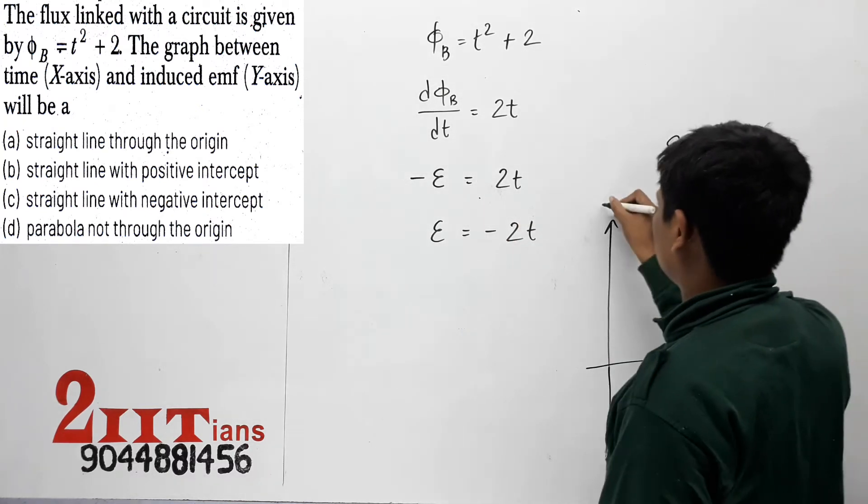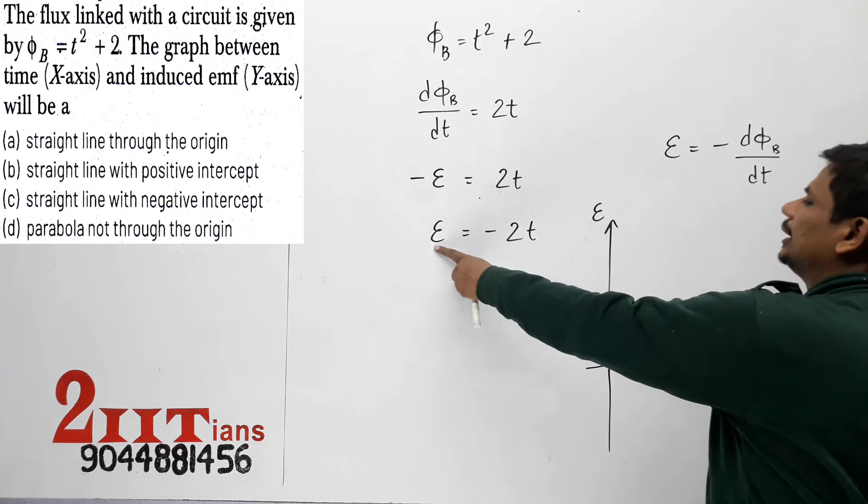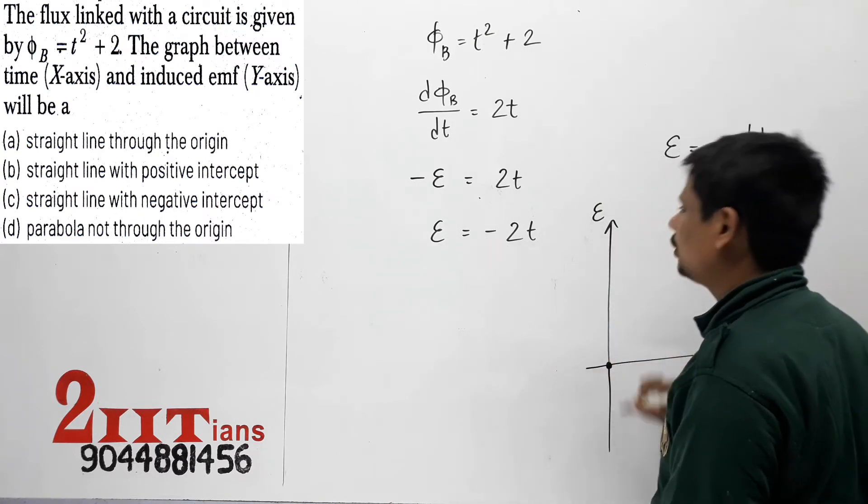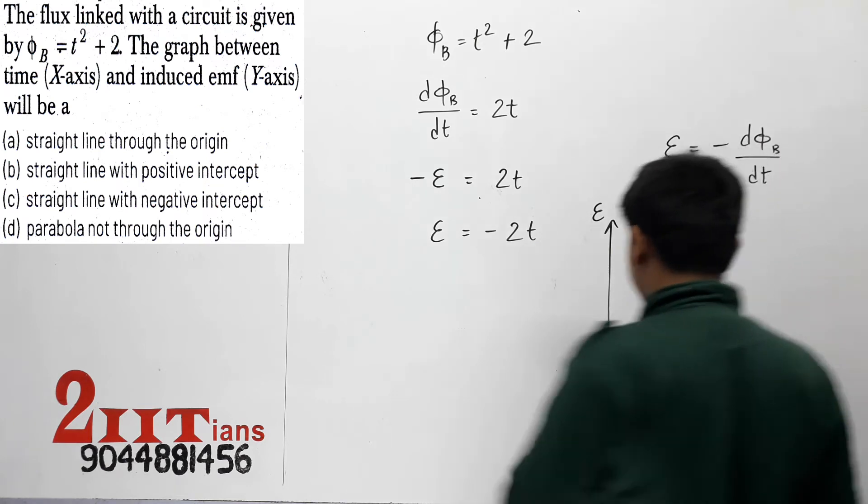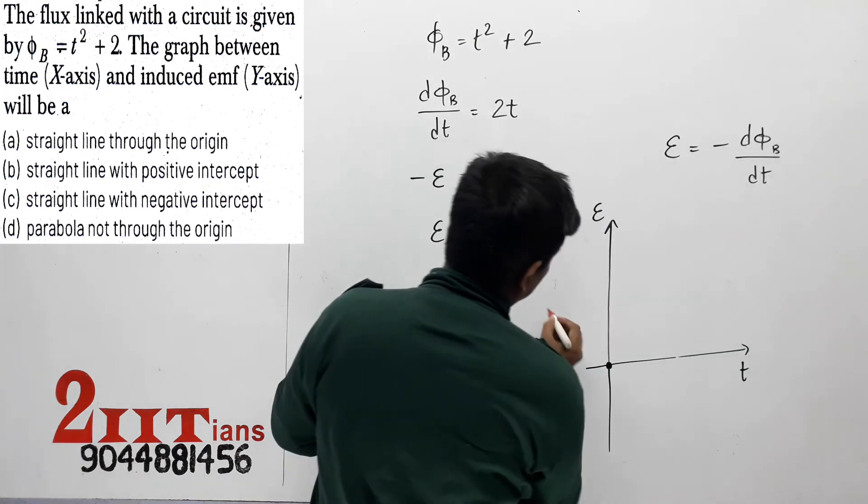Time is here, epsilon is here. When t equals 0, EMF equals 0. With slope minus 2, it will go down. The graph looks like this.